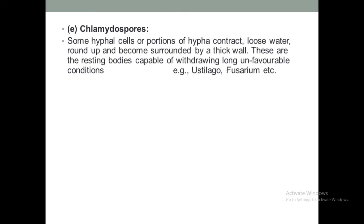The next vegetative reproduction method is chlamydospores, which especially occur in unfavorable conditions. Some hyphal cells or portions of hyphae contract, lose water, round up, and become surrounded by a thick wall. These are resting bodies capable of withstanding long unfavorable conditions. Chlamydospores are formed in fungi like Fusarium and Ustilago.